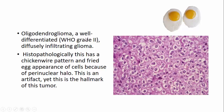Oligodendroglioma is a well-differentiated WHO grade 2 diffusely infiltrating glioma. Histopathologically, it has a chicken-wire pattern due to non-arborizing thin capillaries present in the tumor, and a fried egg appearance of cells due to a perinuclear halo. You can see the nucleus surrounded by a very clear space — the perinuclear halo — which resembles a fried egg.